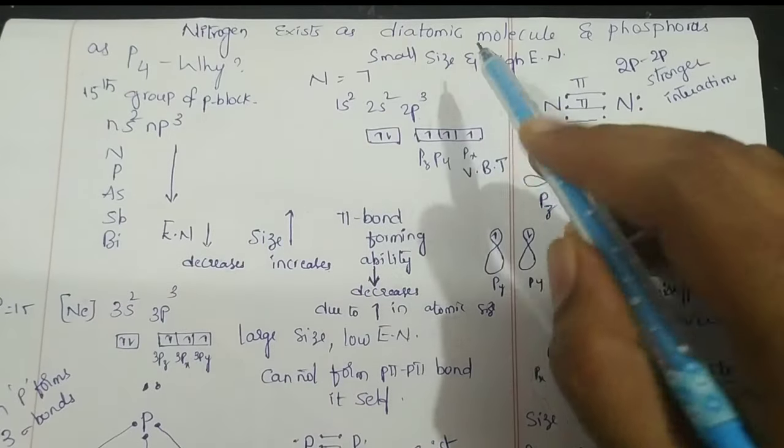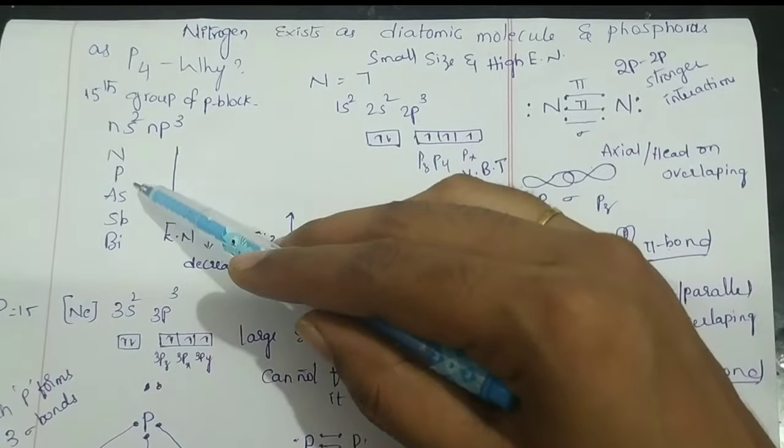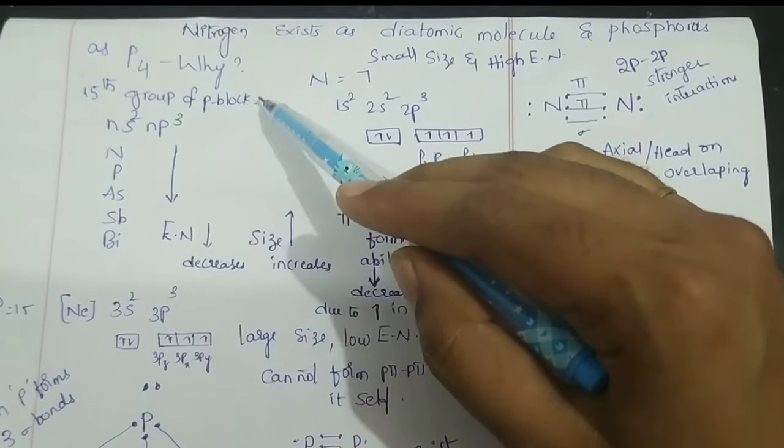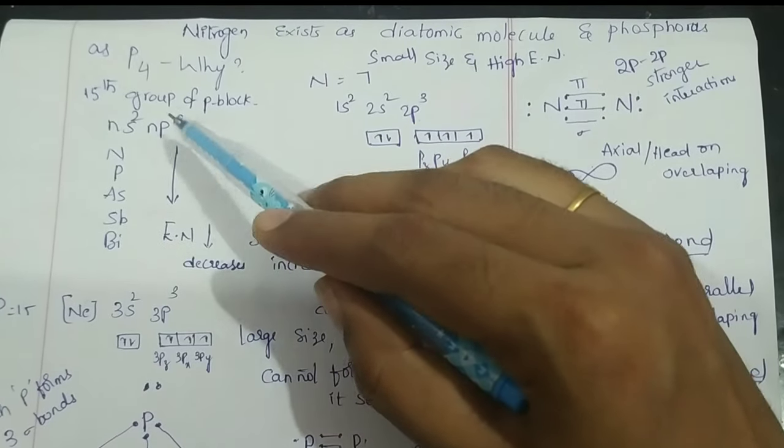Nitrogen exists as a diatomic molecule and phosphorus as P4. Both nitrogen and phosphorus belong to the 15th group of the P-block. The general electronic configuration of 15th group elements is ns²np³.